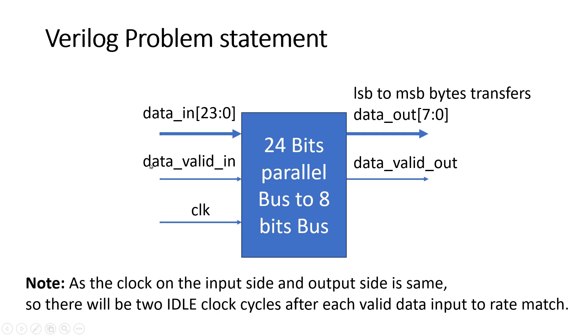Friends, the important point to keep in mind is whenever this data_valid_in is high, then only this data_in will be considered as valid data. Similarly, when this data_valid_out is high, then only data_out will be considered as valid data output. So when we give input, data_valid_in will come for one clock cycle and we will apply three bytes corresponding to that data.